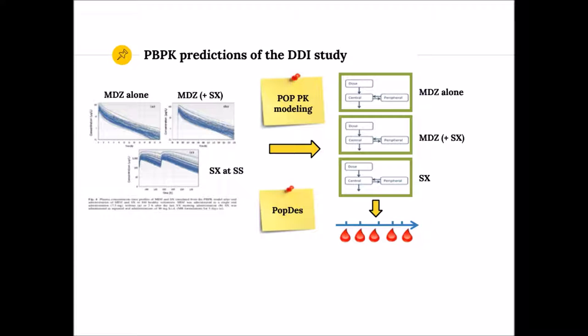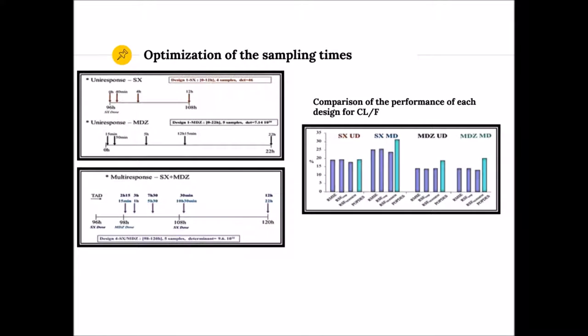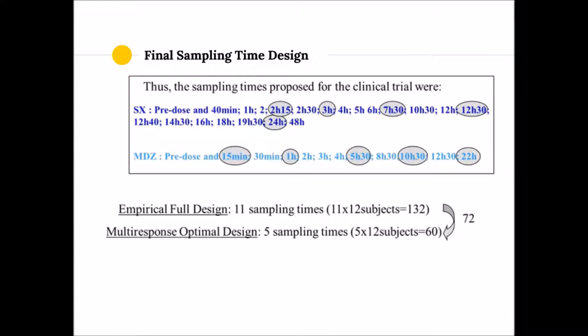On the right are the predicted PK profiles: on the top, midazolam alone (Period A) and when co-administered with drug S (Period B); on the bottom, the PK profile of drug S at steady state (Period C). These PK profiles obtained from the PBPK model were then analyzed by PopPK modeling, and simple PopPK models were used in PopDes to optimize the sampling times. Here are the results: on the right, the optimal sampling times for each drug separately on the top, and for both drugs jointly on the bottom; on the left, the comparison of performance of each design regarding clearance estimation. We concluded that the joint optimal sampling design was doing an acceptable job. For the study, a full empirical sampling time design was proposed, in which the optimal sampling times for both drugs were included, to be able at the end of the trial to assess their performance using real data.